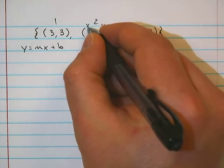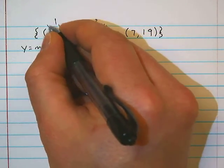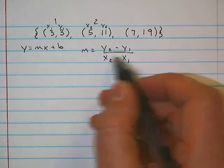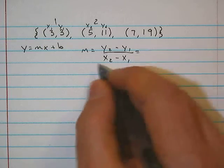That means that this is y2, and this is x2, and that's y1, and that's x1. All right, so now I'm going to substitute in each of my values for their placeholders in the actual formula.